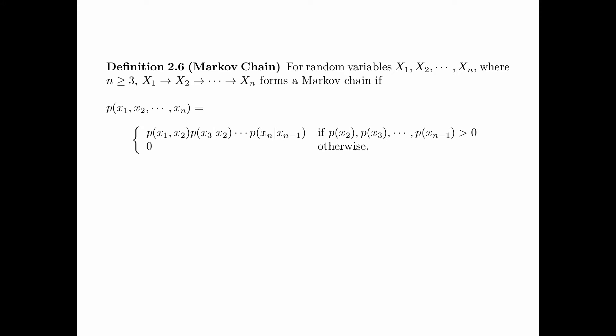If p(x1, x2, ..., xn) is equal to p(x1, x2) · p(x3 | x2) all the way to p(xn | xn−1), provided that p(x2), p(x3), all the way to p(xn−1) is bigger than 0.